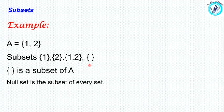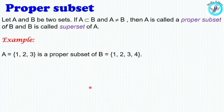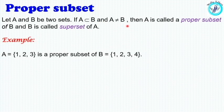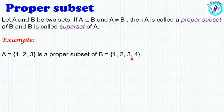Now, the proper subset: A is the subset of B and A is not equal to B. For example, A is {1, 2, 3} and B is {1, 2, 3, 4}. Since all elements of A are in B but A is not equal to B, A is a proper subset of B.